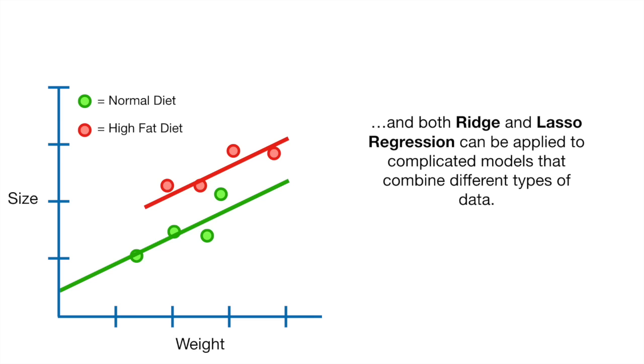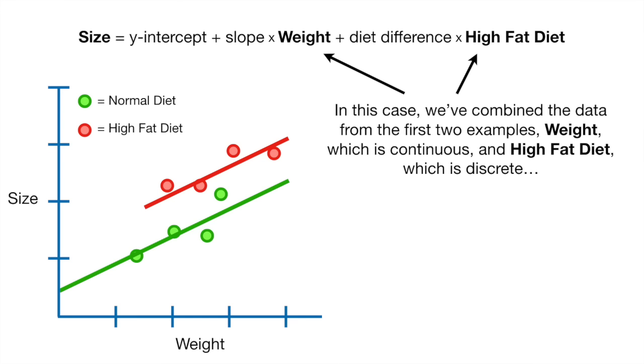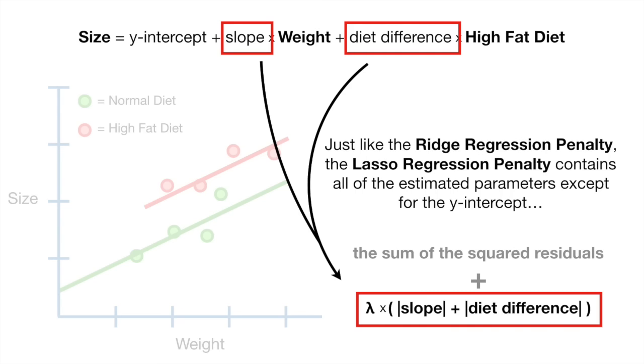And both Ridge and Lasso Regression can be applied to complicated models that combine different types of data. In this case, we've combined the data from the first two examples, weight, which is continuous, and high-fat diet, which is discrete. Just like the Ridge Regression penalty, the Lasso Regression penalty contains all of the estimated parameters except for the Y intercept.